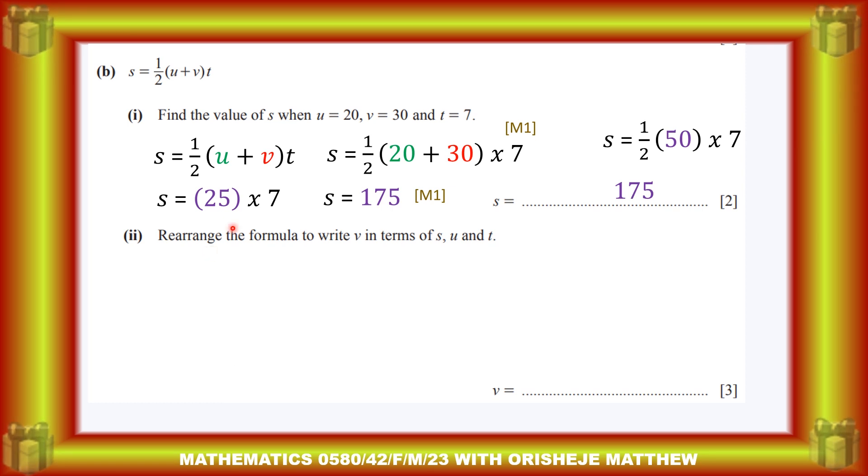The second part: rearrange the formula to write v in terms of s, u, and t. So we have the formula—make v the subject of the formula. To do that, the first thing we're going to do is multiply the expression on both left and right-hand sides, multiply through by 2. So that gives 2s = (u + v)t. For that, you have the first one mark out of the three marks.